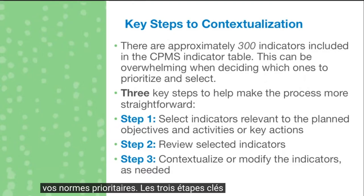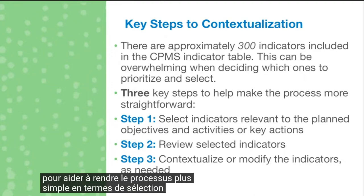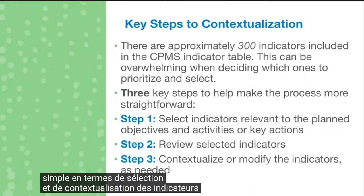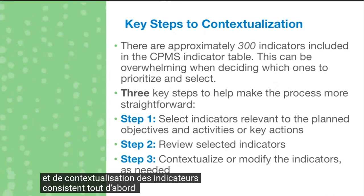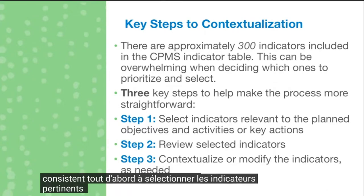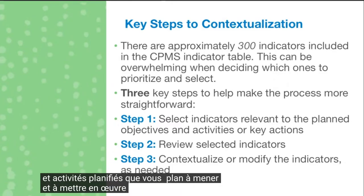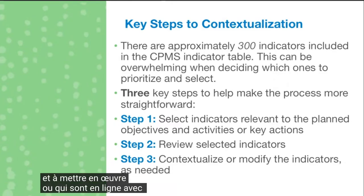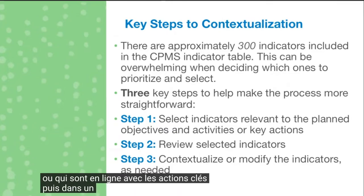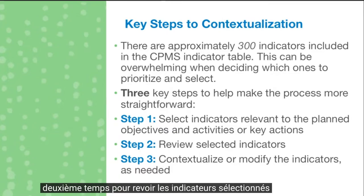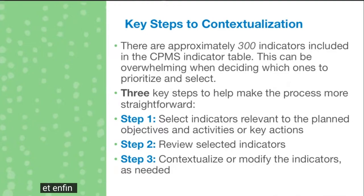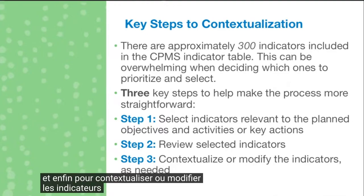The three key steps to help make the process more straightforward are: firstly, to select the indicators relevant to your planned objectives and activities, or that are in line with the key actions; then secondly, to review the selected indicators; and lastly, to contextualize or modify the indicators as needed.